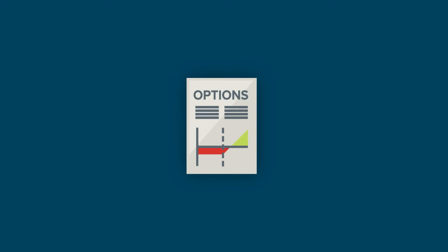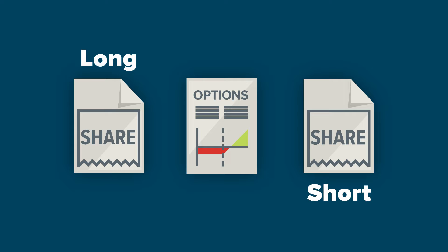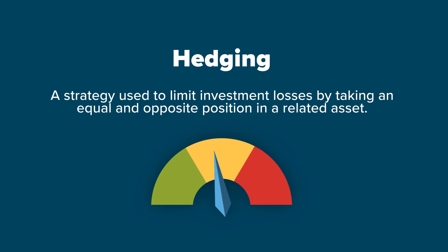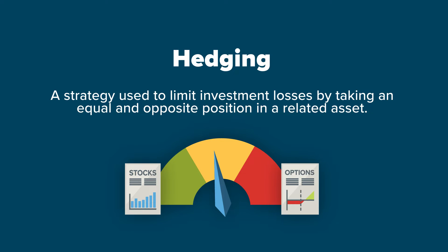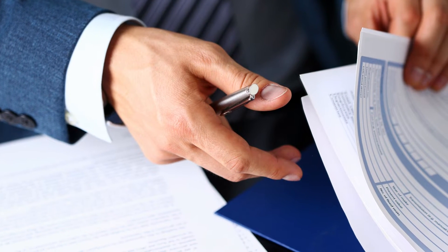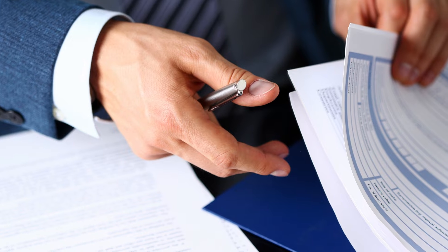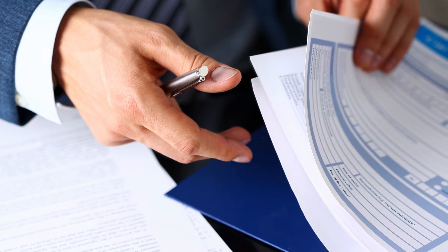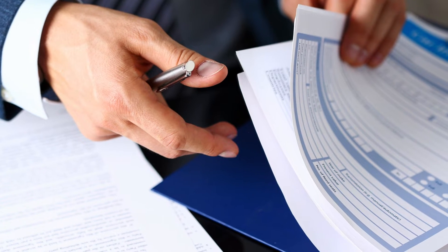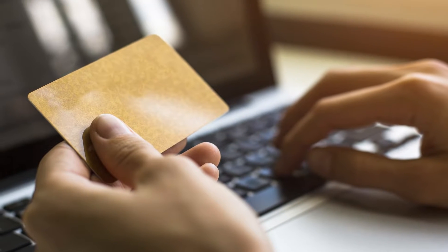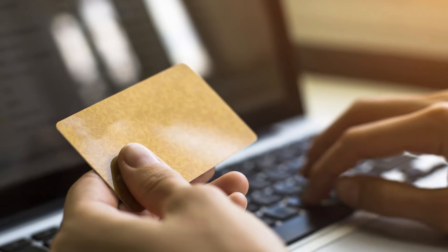An investor can use options to hedge both long and short positions. Hedging is defined as a strategy used to limit investment losses by taking an equal and opposite position in a related asset. A good way to think about hedging is insurance. A person gets car insurance to protect against damage caused by an accident, or homeowners insurance to protect the value of their house in case it is damaged or destroyed. In both cases, the investor is paying to protect their position.